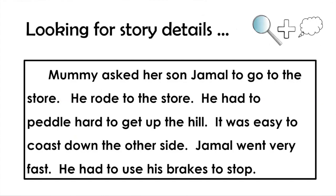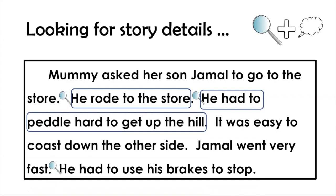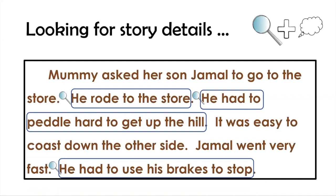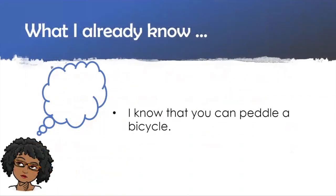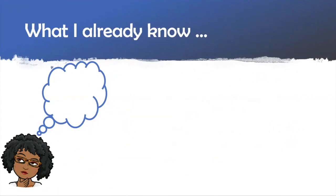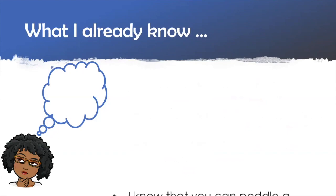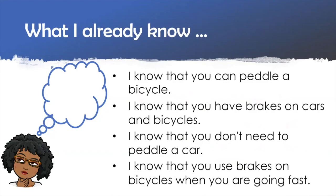Now, let's look for the story details first. The first detail I saw was that it said he rode to the store. Did you see another detail? Another detail says he had to use his brakes to stop. Now, let's think about what we know in our head. I know that you can pedal a bicycle. I also know that you have brakes on cars and bicycles. I know that you don't need to pedal a car. I know that you use brakes on bicycles when you are going fast.